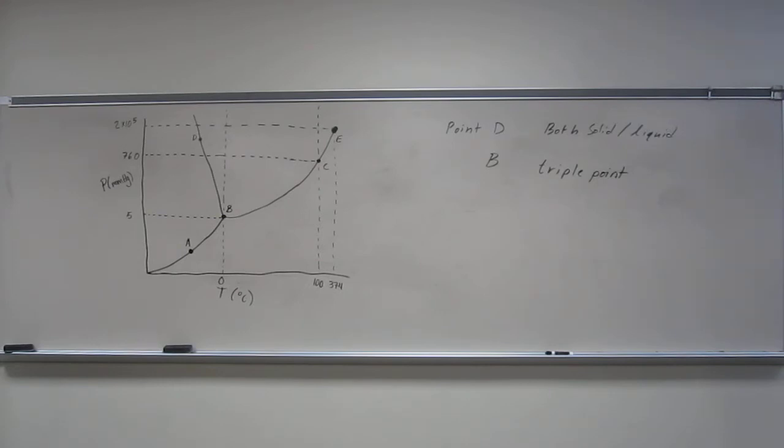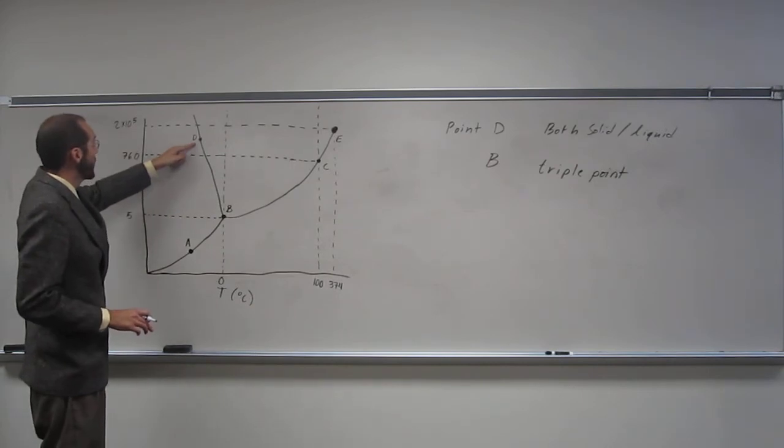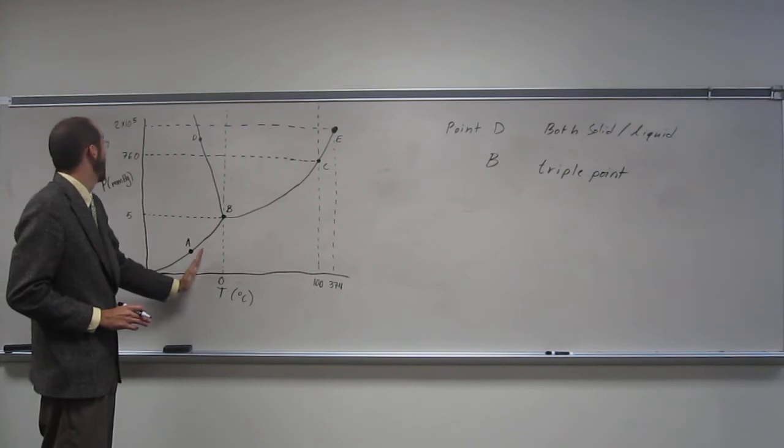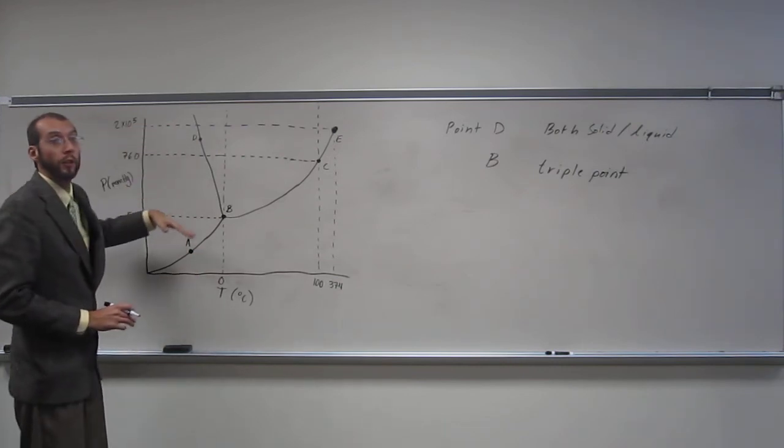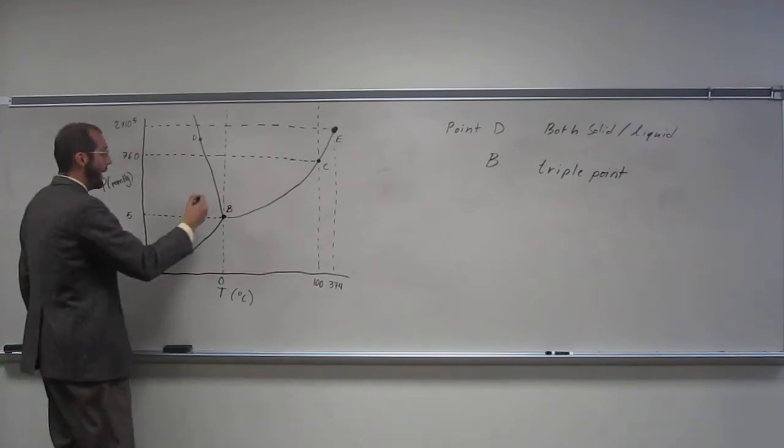What would happen to the sample if we were at D, point D, and we kept the temperature the same but we decreased the pressure? What would happen? Solid. So only a solid would be present. Is that okay with everybody?